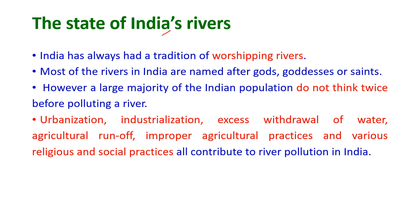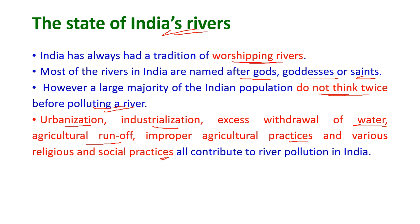Regarding the state of India's rivers: India has always had a tradition of worshipping rivers, and most rivers are named after gods, goddesses or saints. However, a large majority of the Indian population do not think twice before polluting a river. Urbanization, industrialization, excess withdrawal of water, agricultural runoff, improper agricultural practices and various religious and social practices all contribute to river pollution in India.